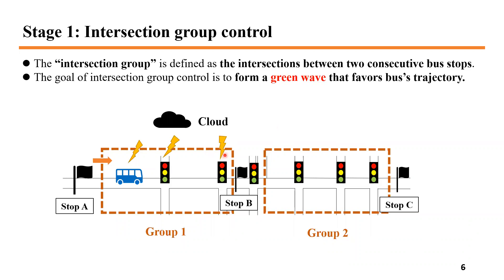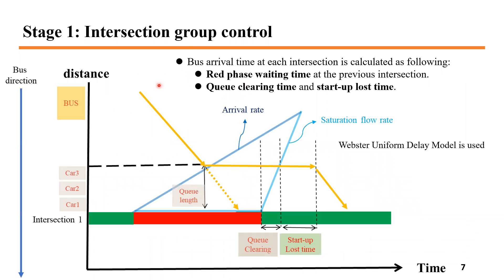The intersection group is defined as the intersections between two consecutive bus stops. The goal of intersection group control is to form a green wave that favors bus trajectory. In stage one, we estimate the bus arrival time at each intersection, which allows calculation of the red phase waiting time at the previous intersection. Queue clearing time and startup loss time are also considered, estimated using arrival rates and saturation flow rates from real-world traffic survey historical data. The Webster uniform delay model is used in this part.